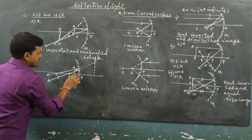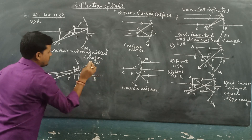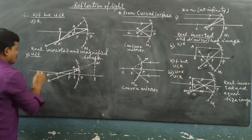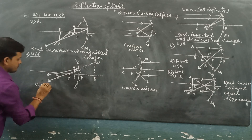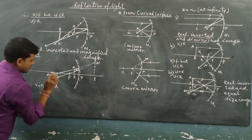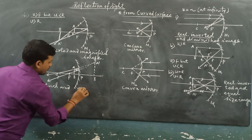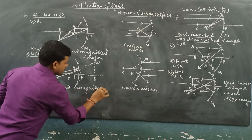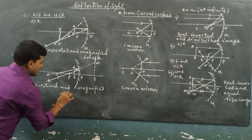This is A B, the object, and here A prime B prime will be the virtual image. So the virtual and magnified image is formed.